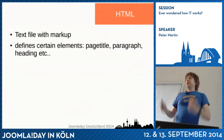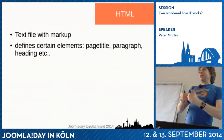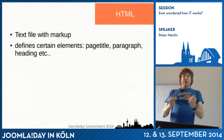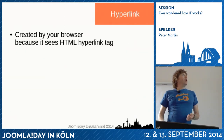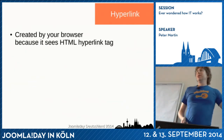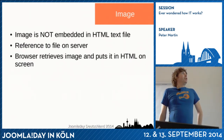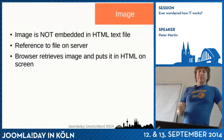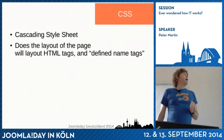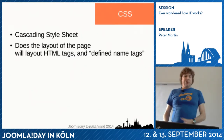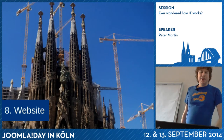HTML is just a text file with markup, and this markup defines what a certain element in your text means. Your browser interprets it — for example, making a hyperlink out of a hyperlink tag. Images are not in your HTML; there are only references to images in your HTML. CSS is also just plain text, and then there's JavaScript.